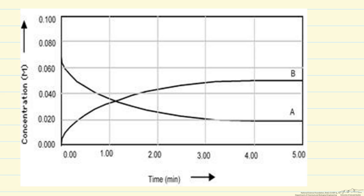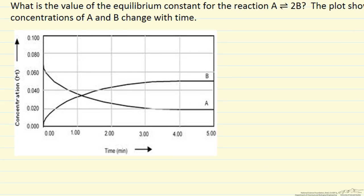At long enough time, in this case 5 minutes, we can see the concentration has reached equilibrium value. In other words, the concentrations of A and B are no longer changing with time. At equilibrium we can use these concentrations at 5 minutes to calculate an equilibrium constant.